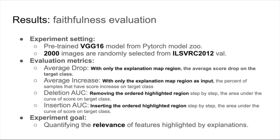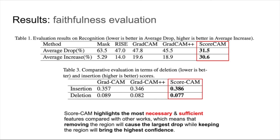As a method of explanation, to quantify the relevance of highlighted region to the network decision, we conduct faithfulness evaluation on a pre-trained VGG16 model and 2000 randomly selected images. Average drop, average increase, deletion AUC, and insertion AUC are used as metrics. Score-CAM achieves the best performance on all these metrics. It highlights the most necessary and sufficient features compared with other works, which means that removing the region will cause the largest drop while keeping the region will bring the highest confidence.